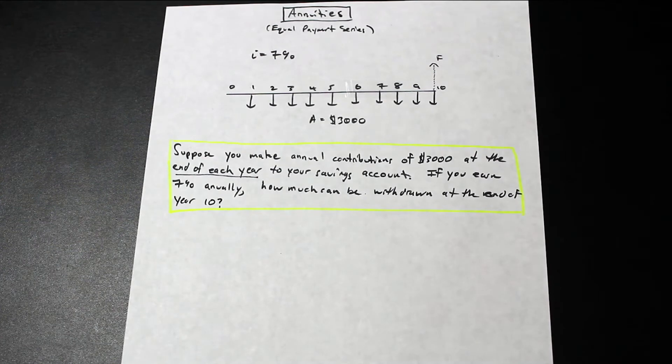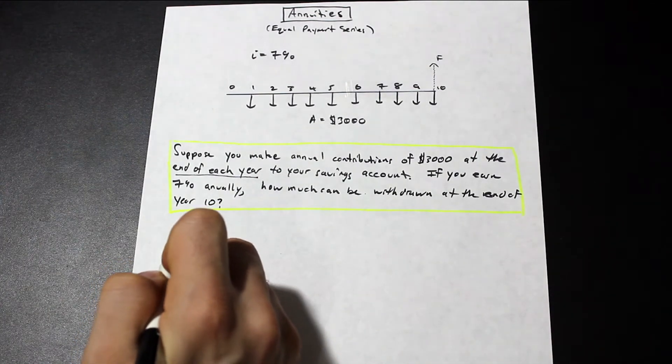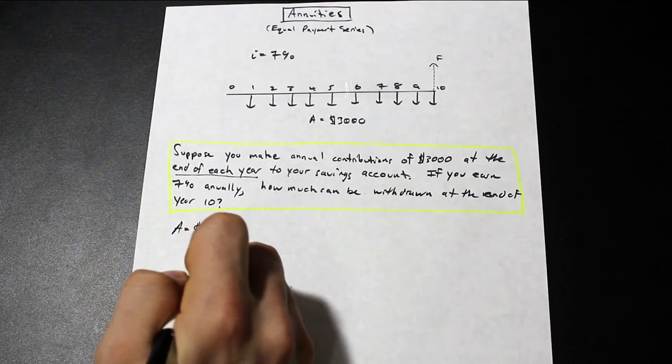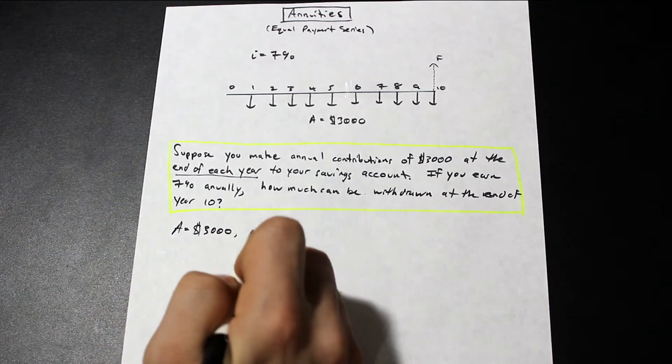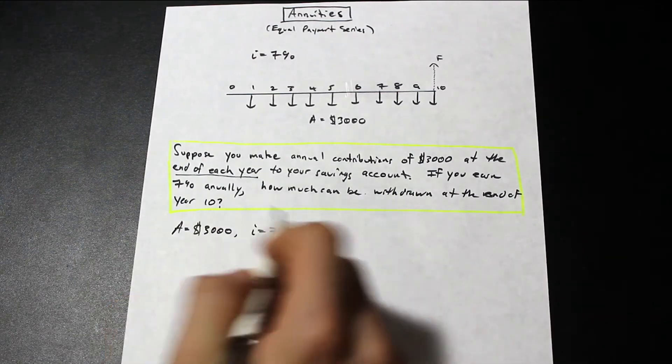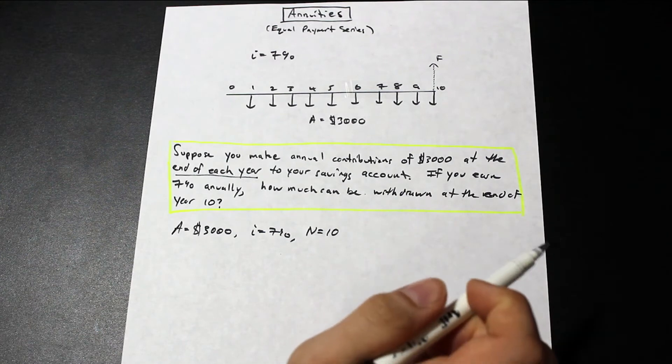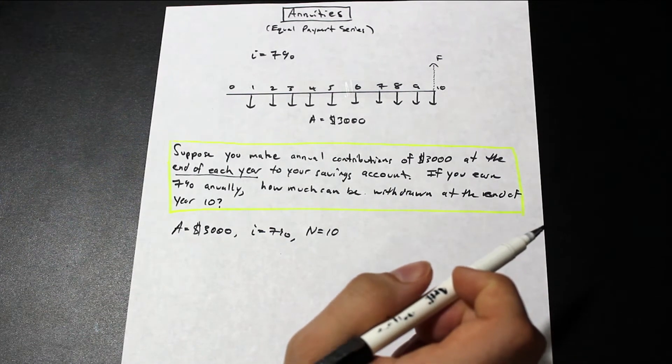So let's go ahead, and let's go to the interest table, and let's find our factors. So let's write out what we have first. We have our A, which is our equal series payment, that's equal to $3,000, our I is equal to 7%, and our n is equal to 10, we have 10 payments at end of year, and what else do we need? Well, we need the interest factor now.